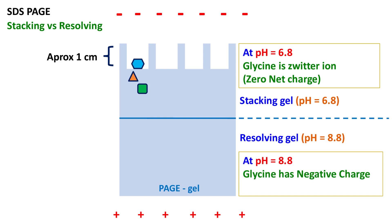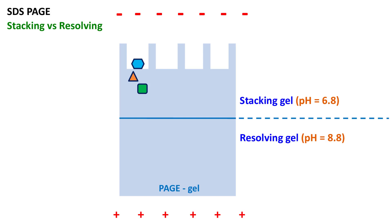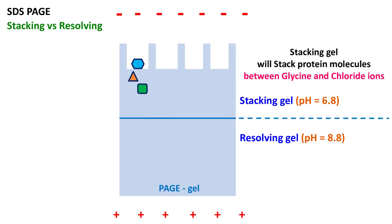You must be wondering how glycine comes into the picture. Glycine is a major component of the buffer used in SDS-PAGE. Along with glycine, there are also chloride ions. The term 'stacking gel' literally means it's going to stack all the protein molecules, and this stacking occurs between glycine and chloride ions.